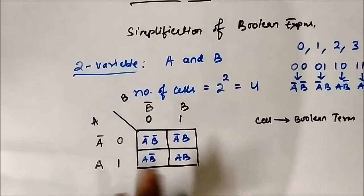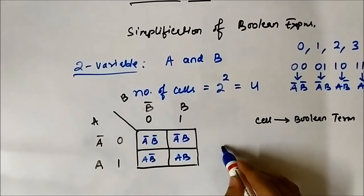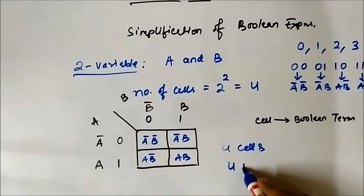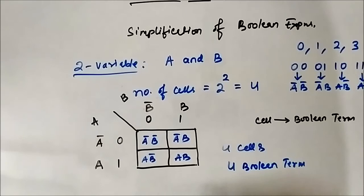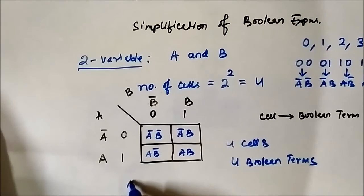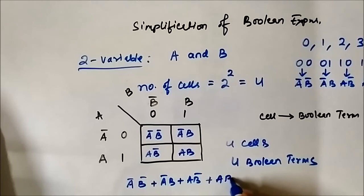So each cell in this two-variable K-map represents a particular Boolean term. The total number of cells is 4, and the maximum number of terms that can be formed using two variables is also 4. Each cell stands for a particular Boolean term: A-bar B-bar, A-bar B, A B-bar, and A B. This is the two-variable K-map for SOP. Now let us discuss the three-variable K-map.